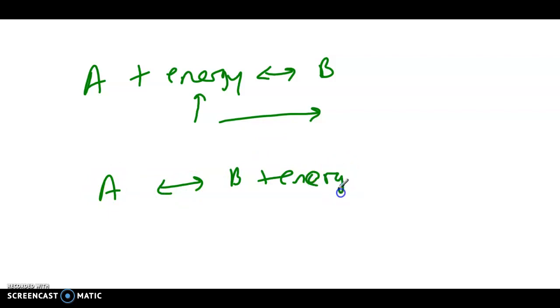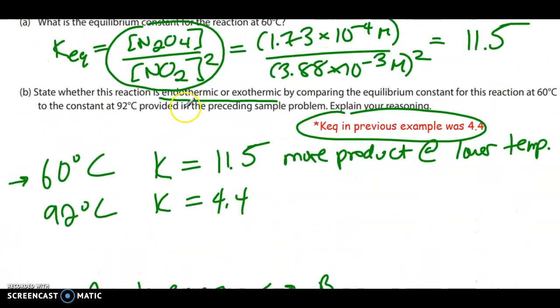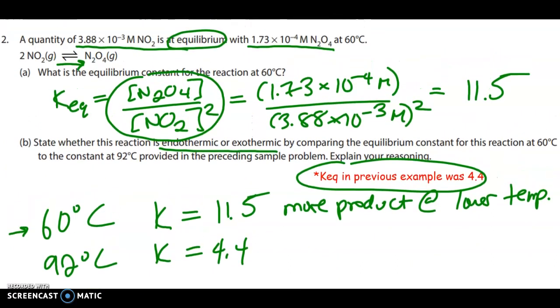When we have a lower temperature, it's driving the forward reaction more, so it favors the forward reaction. Therefore, I would say that the forward reaction is exothermic. You're kind of bringing in your ideas from Le Chatelier's shifting to try and analyze the different K values that we're seeing.